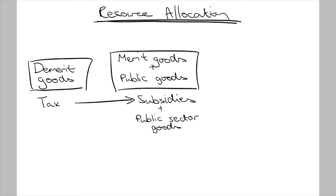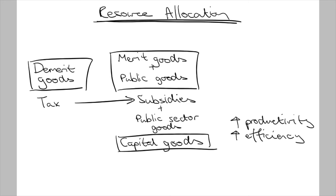There is one more concept to consider when writing about fiscal policy and resource allocation. Beyond correcting market failures, another reason the government would reallocate resources is to increase productivity and efficiency in the long term. For example, the government could allocate resources towards building transport infrastructure, reducing time and productivity lost to traffic congestion, causing the economy to increase in technical efficiency.